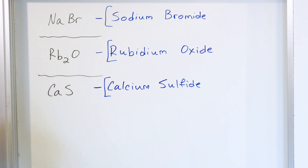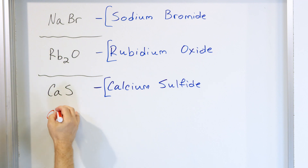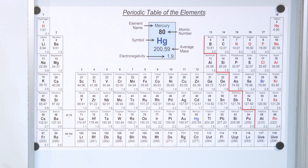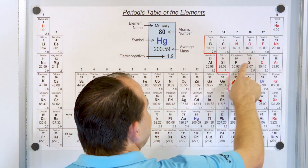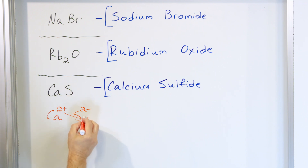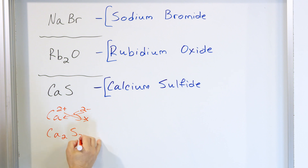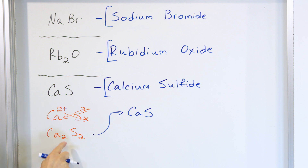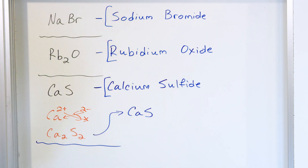Does it make sense that this is correct? Calcium would take on a positive two charge and sulfur would take on a negative two charge — calcium losing two electrons to look like argon, and sulfur gaining two electrons to also look like argon. When we do the crisscross, we get Ca₂S₂. You might say this is different than CaS, but for ionic compounds we look for the lowest ratio in the formula unit. Two to two is the same ratio as one to one — divide both by two and we get one and one. So CaS is the correct formula unit.